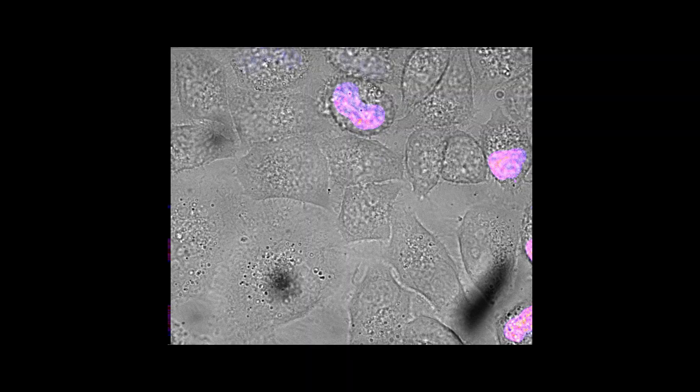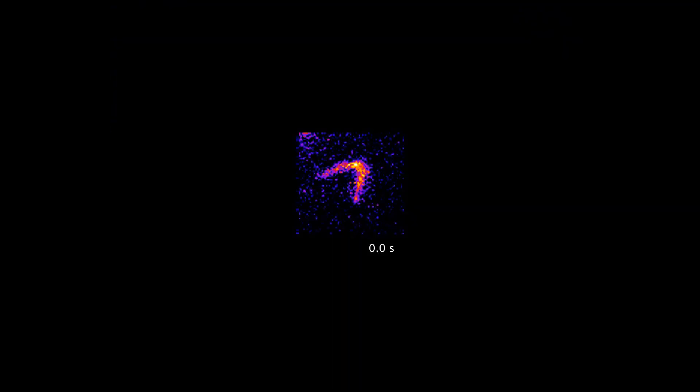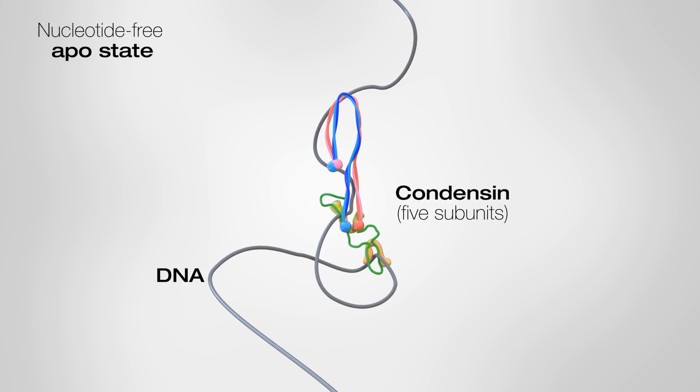This process takes mere minutes, and just one molecular machine, condensin. We have previously shown that condensin uses ATP hydrolysis to fuel the creation and expansion of DNA loops, but how it accomplishes this task was unclear, as it does not look anything like other motors that move on DNA.